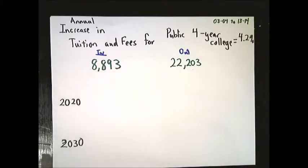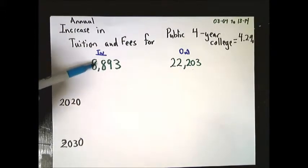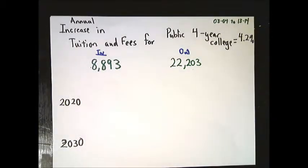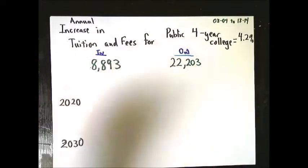Anyway, the annual increase in tuition and fees, just tuition and fees, for public four-year colleges is about 4.2% per year between 2003-04 and 2013-14. That's about 4.2%. It's been steadily in that general range over the last 20 to 30 years. If you are an in-state college student, you pay on average $8,893 just in tuition and fees. This isn't housing or anything. And if you're from out-of-state, it's $22,203.